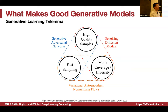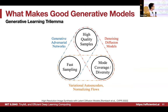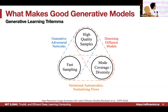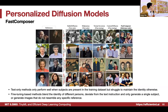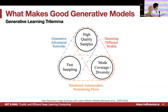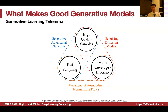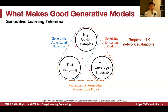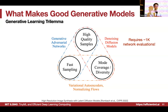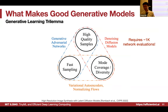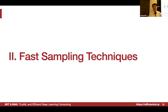There's a generative learning trilemma. GANs give high quality and fast sampling but have hard convergence and poor diversity. Diffusion models have good quality and convergence but are slow — vanilla versions require 1,000 iterations and many network evaluations. Variational autoencoders converge well and are fast but produce poor quality. Let's talk about how to make diffusion models faster.